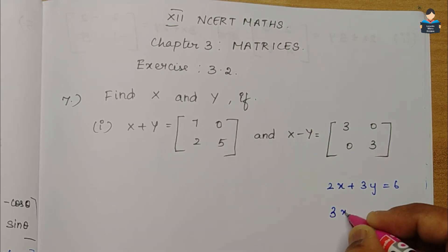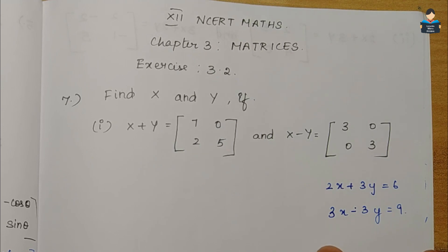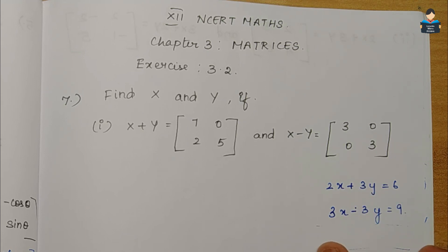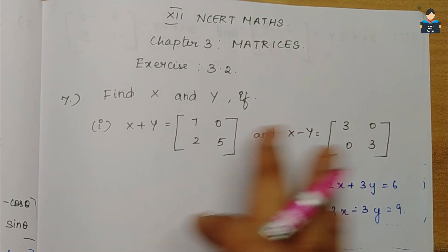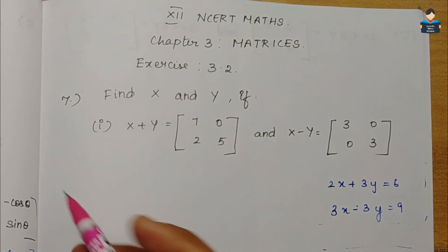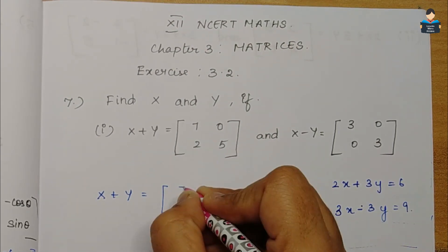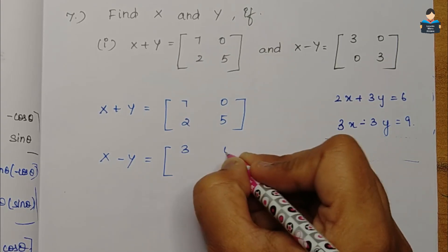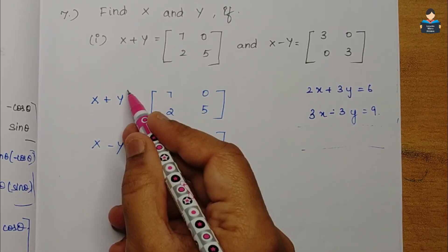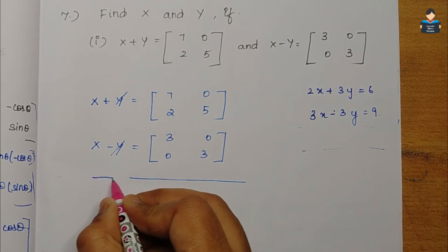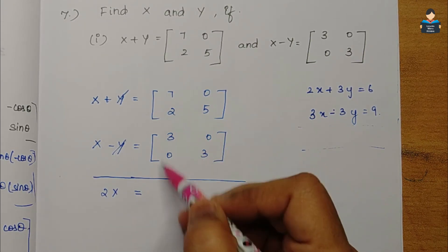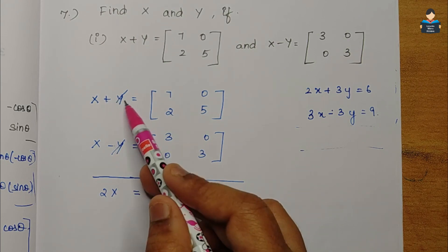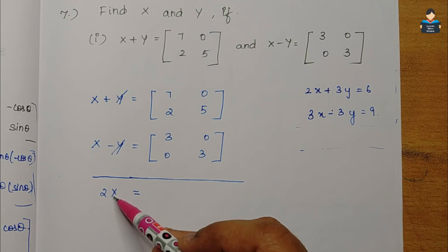In the elimination method, when two equations are given — for example, 2x plus 3y equals 6 and 3x minus 3y equals 9 — we change the sign and cancel terms with opposite signs to find x and y values. We will do the same here, but with matrices. So x plus y equals the matrix [[7,0],[2,5]] and x minus y equals [[3,0],[0,3]]. Adding them, the plus y and minus y will cancel out, leaving us with 2x.